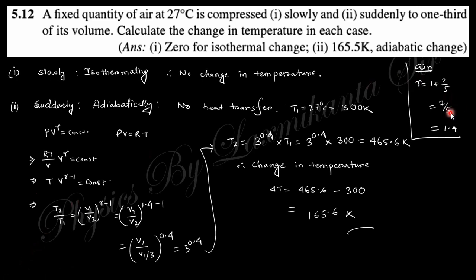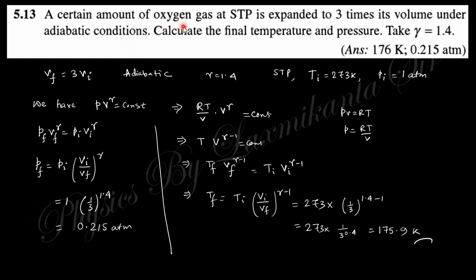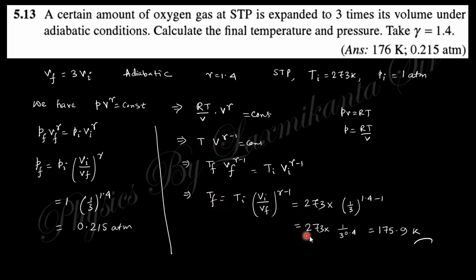For air, gamma is taken as that of a diatomic gas because most gases in air are diatomic. Question 14: A certain amount of oxygen gas at STP is expanded to three times its volume under adiabatic conditions. Final volume is three times initial volume. STP means initial temperature is 273 K and initial pressure is 1 atmosphere. Using PV^γ = constant and the temperature-volume relation, the final pressure and final temperature of 157.9 K are calculated.